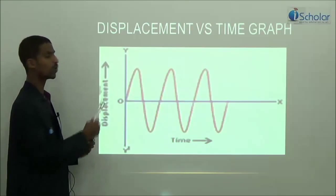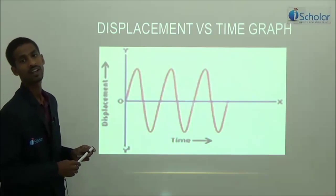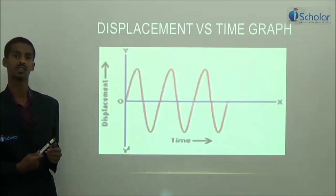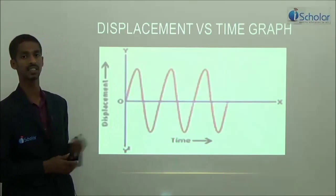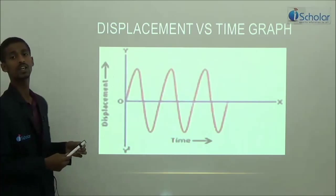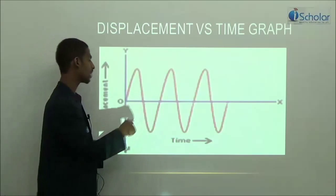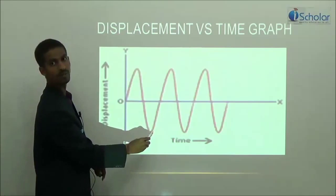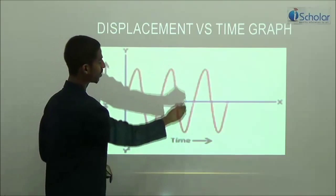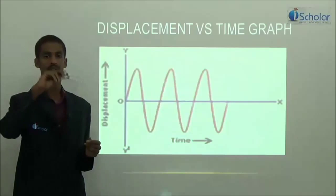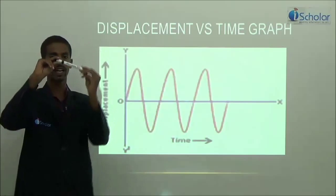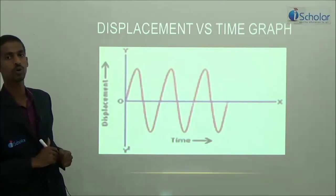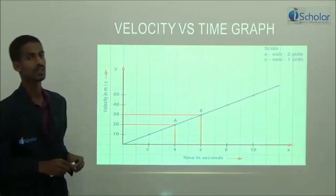Here is one more type of displacement-time graph. Can anyone tell which type of motion this graph represents? This graph represents to-and-fro motion. With respect to time, displacement goes from positive maximum to negative maximum, then back — positive, zero, negative — continuously. So this is a displacement-time graph for to-and-fro motion.